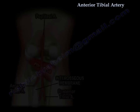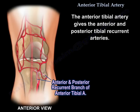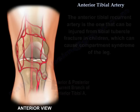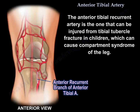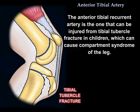The anterior tibial artery gives the anterior and posterior tibial recurrent arteries. The anterior tibial recurrent artery is the one that can be injured from a tibial tubercle fracture in children, and this can cause compartment syndrome of the leg.